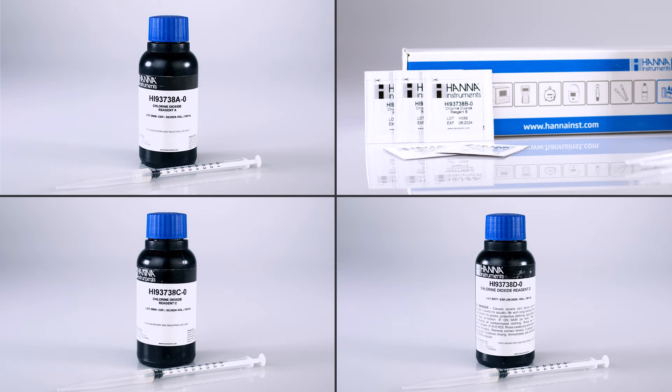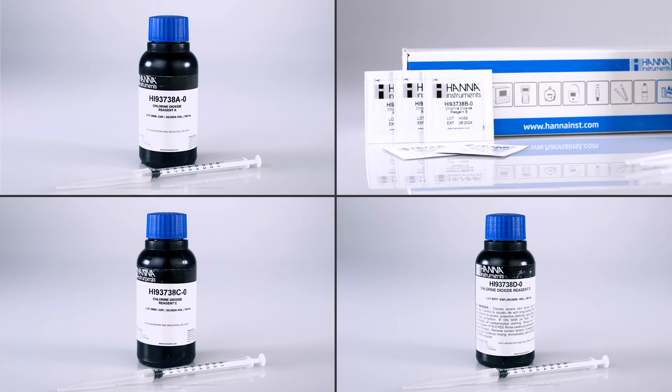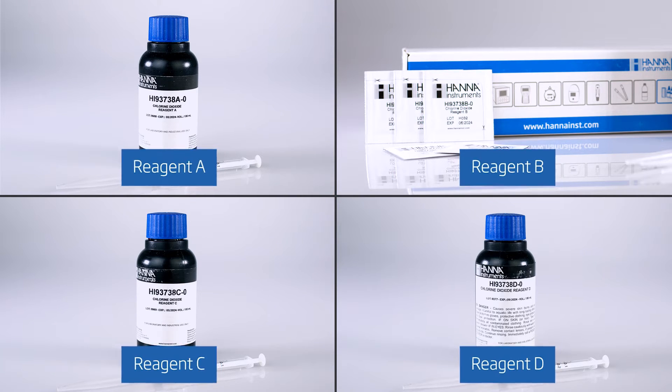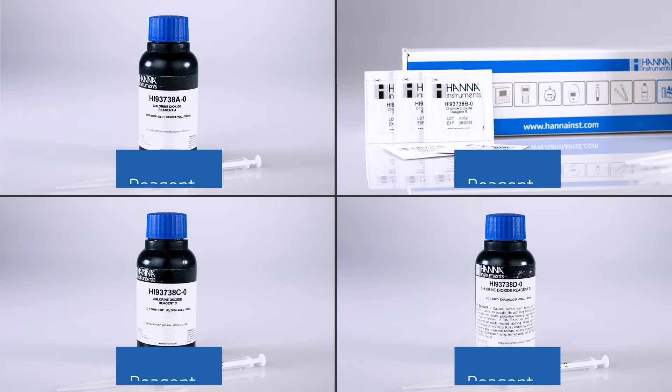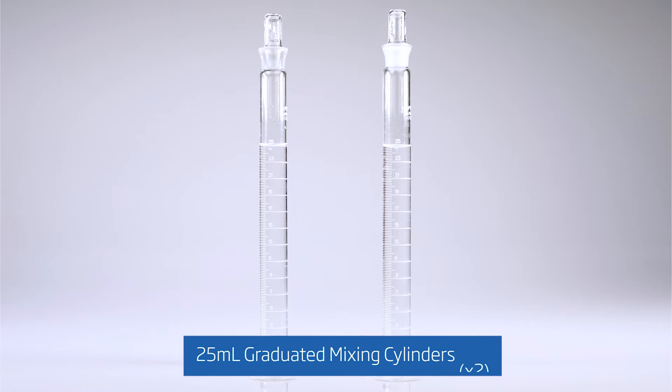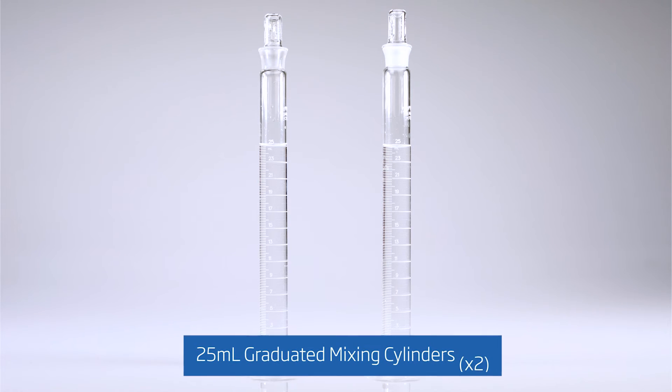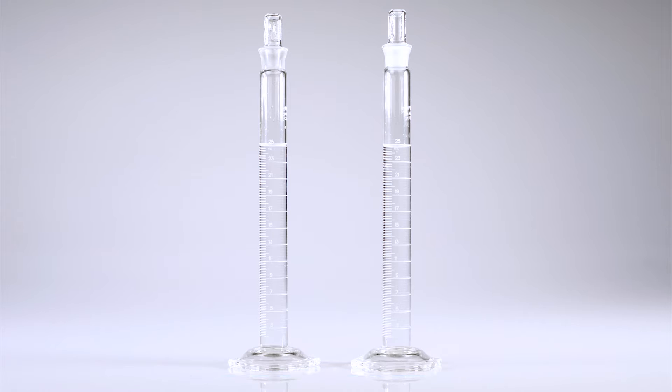Required reagents are sold separately under one of two product numbers: HI-93738-01 for 100 tests, and HI-93738-03 for 300 tests. These packs include reagents A through D along with the necessary syringes for proper measurement. In addition, you will need to obtain two 25 milliliter or larger graduated mixing cylinders with caps from your trusted labware provider.